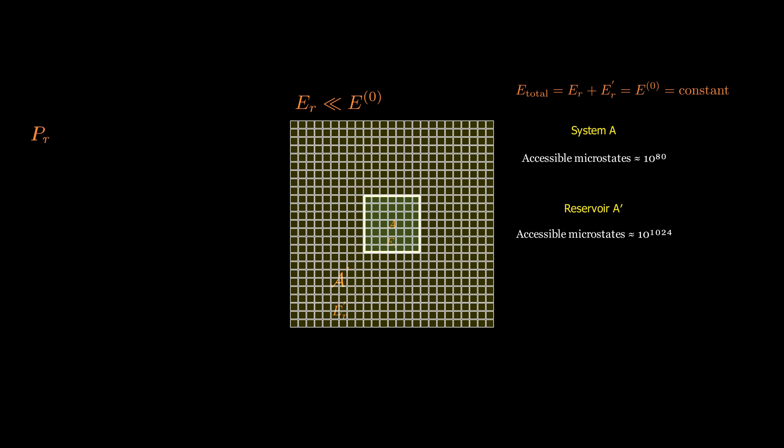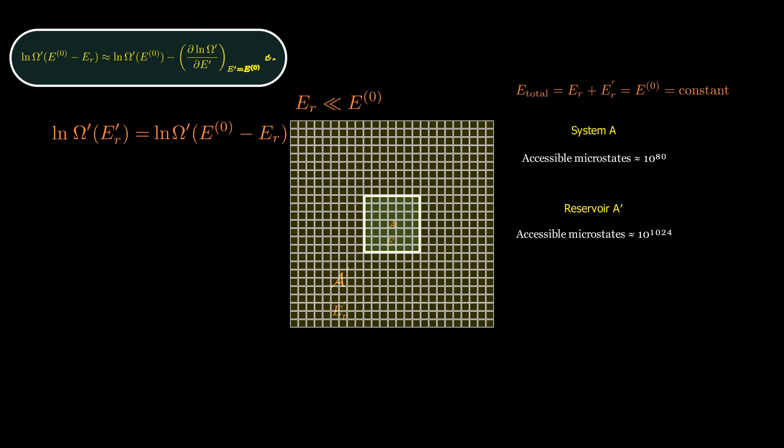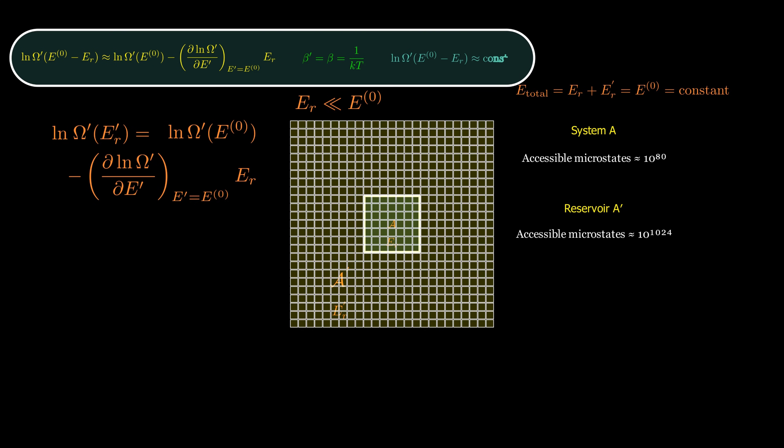we remember that the probability of system A being in a particular state with energy ER is proportional to the number of microstates accessible to the reservoir when it has the following energy. To simplify this, we take the logarithm of omega prime and expand it using a Taylor series. The derivative is just the inverse temperature of the reservoir, which equals the inverse temperature of system A in equilibrium. Exponentiating both sides gives us the probability up to a normalization constant. This is known as the Boltzmann factor. It tells us that the probability of a state decreases exponentially with its energy.